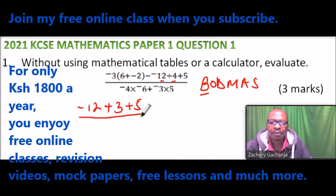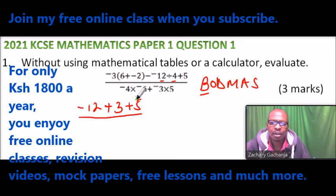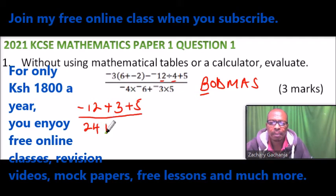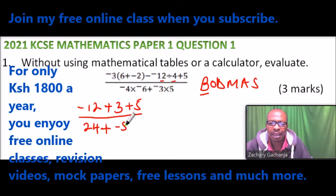For the denominator, we don't have a bracket, of, or division, so we start with multiplication. Minus 4 multiplied by minus 6 gives positive 24. Then minus 3 times 5 gives minus 15.